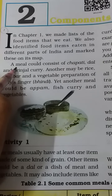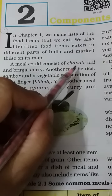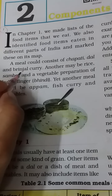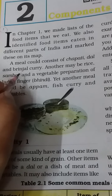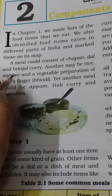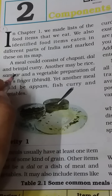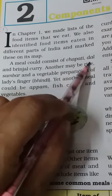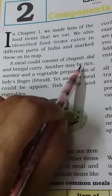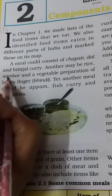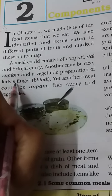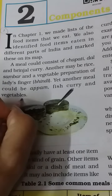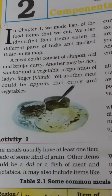A meal consists of chapati, dal and brinjal curry. If we eat one meal — say lunch — then we eat dal, chawal and some kind of vegetables, or brinjal curry with chapati and dal. Or we eat rice in the meal, or lady finger. Yet another meal could be appam, fish curry and vegetables, or fish curry or anything else.